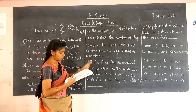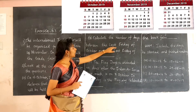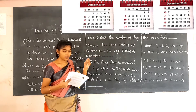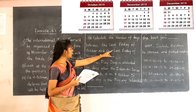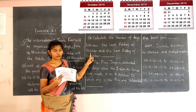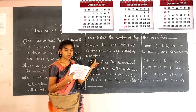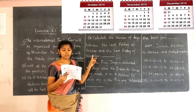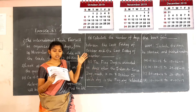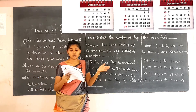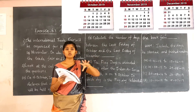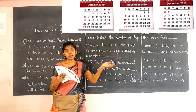Next question: calculate the number of days between the last Friday of October and the last Friday of November. The last Friday of October is the 25th, and the last Friday of November is the 29th. Since we are finding days in between, we neglect the first date (25 October) and the last date (29 November).